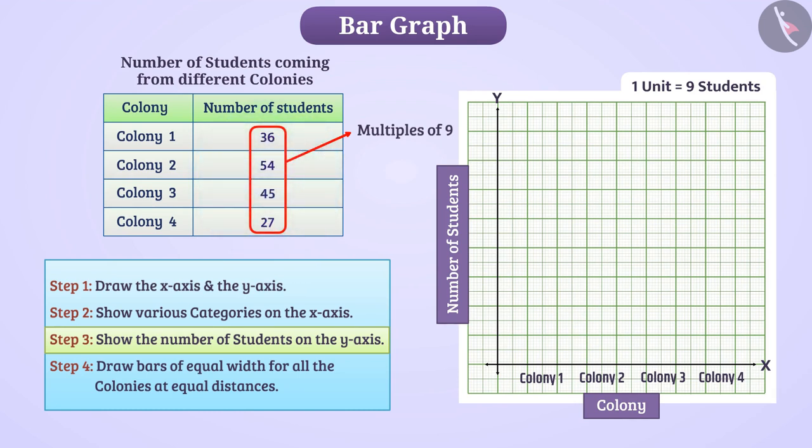In this way, we will show the numbers 0, 9, 18, etc. on the y-axis. The maximum value here is 54, but for our convenience, we have taken numbers up to 63 on the y-axis.